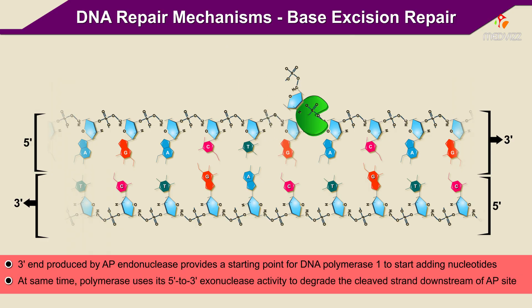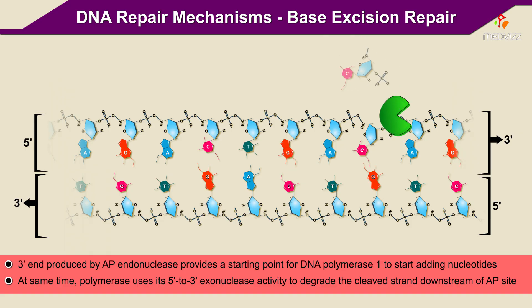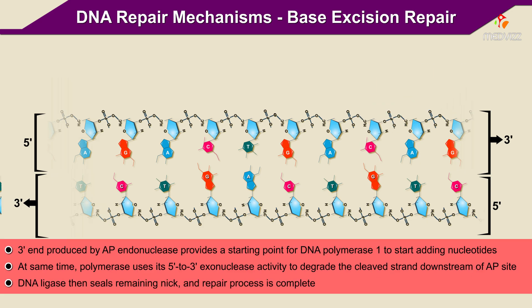At the same time, the polymerase uses its 5' to 3' exonuclease activity to degrade the cleaved strand downstream of the AP site. DNA ligase then seals the remaining nick and the repair process is complete.